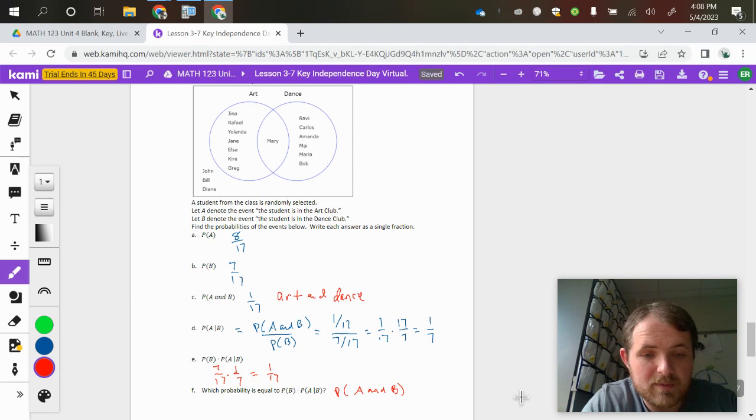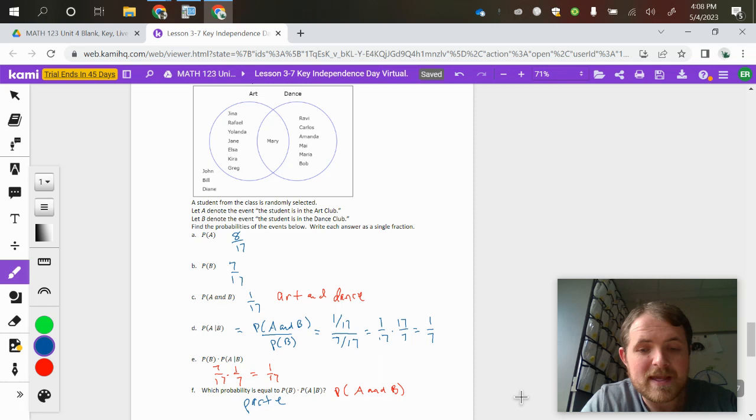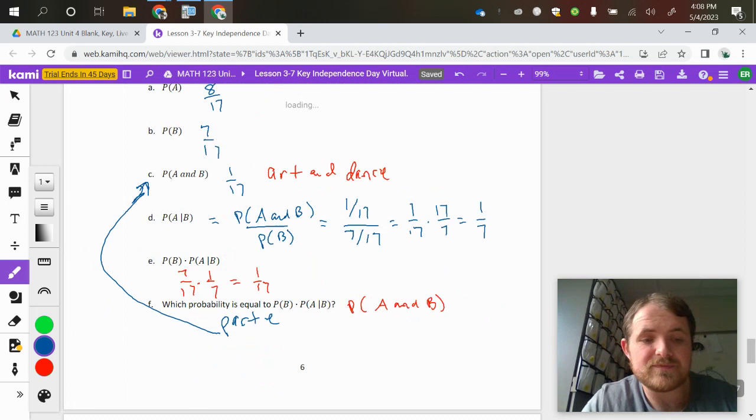It says which probability is equal to - basically that's just asking about part E, what probability is equal to part A. And if you notice, you got the same fraction as part C there, which is again just demonstrating the formula.